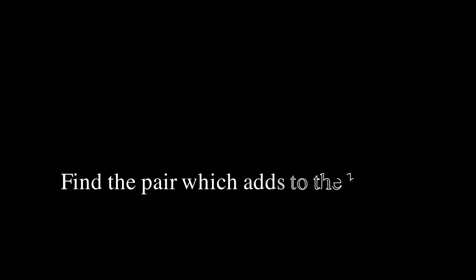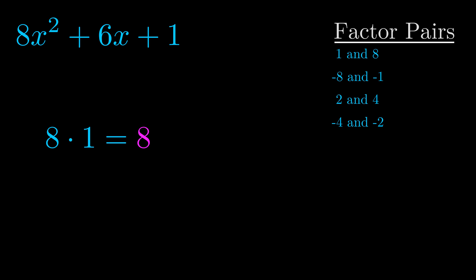The b value is the coefficient on the x term. That's the middle term, the one that we haven't done anything with yet. And really this is the only factor pair that we need.